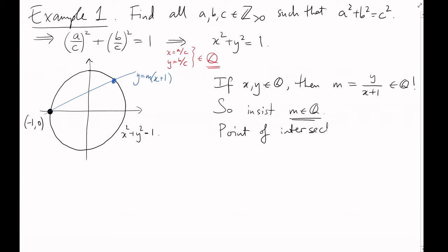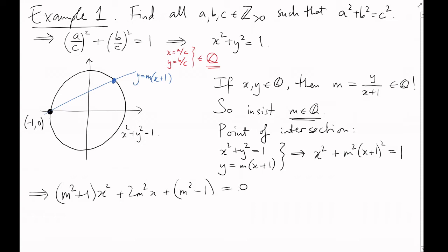We can work out algebraically where the line intersects the circle. Substituting the equation of the line into the equation of the circle gives (m squared plus 1)x squared plus 2m squared x plus m squared minus 1 equals 0. This is a quadratic equation in x, so we can just solve it directly and work out when x is rational.